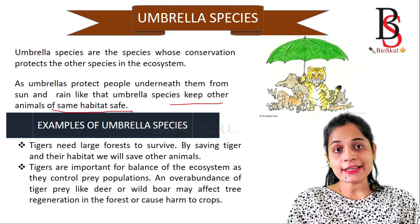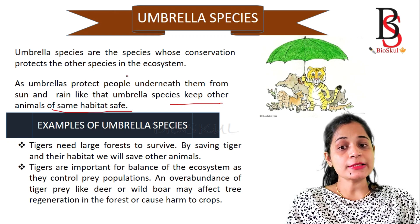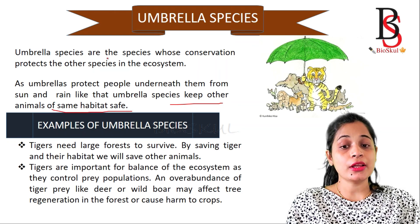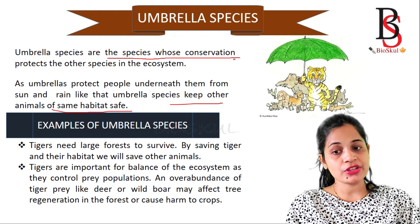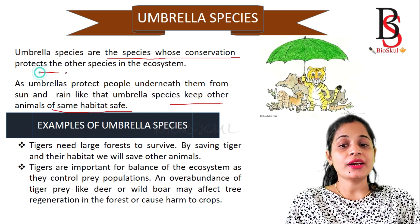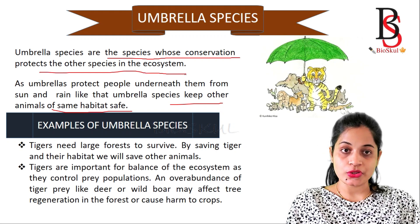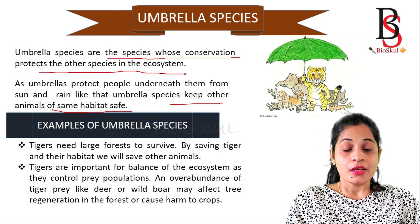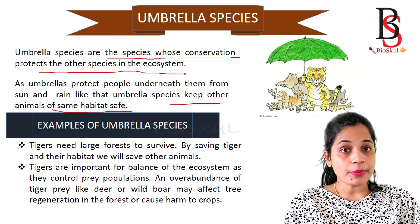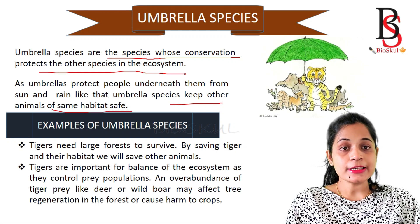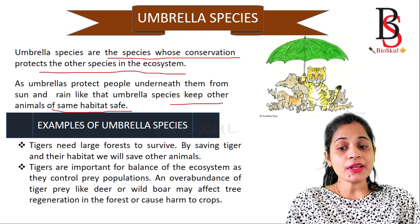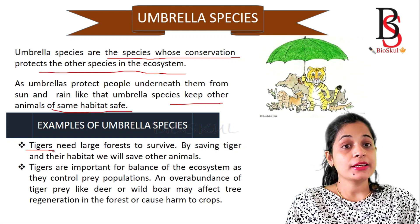We can say that umbrella species are the species whose conservation protects other species in the ecosystem. One example of umbrella species is the tiger.